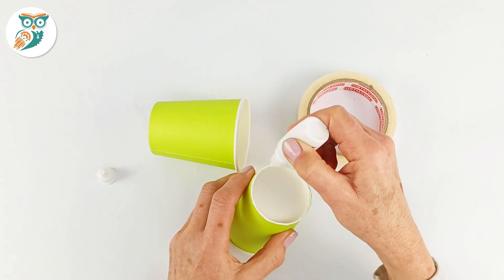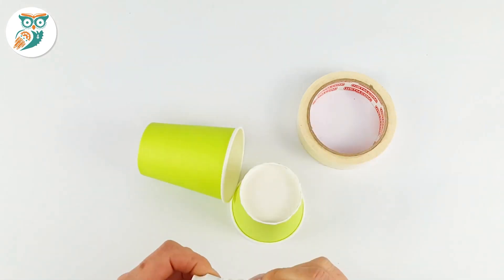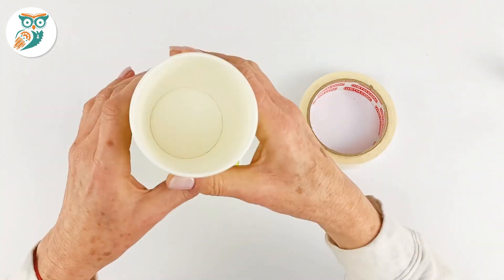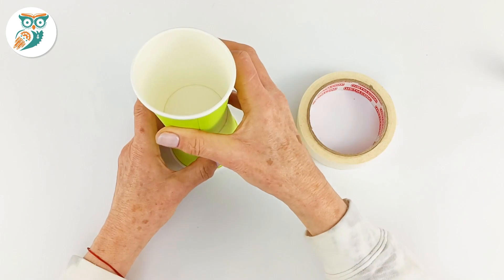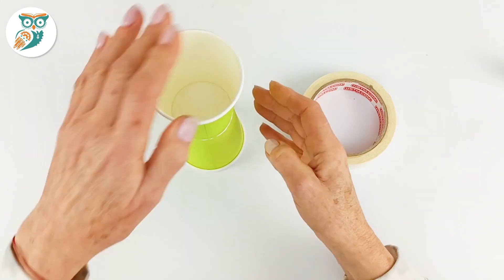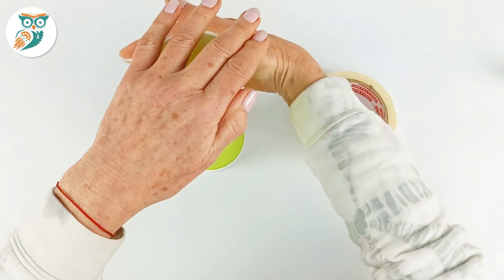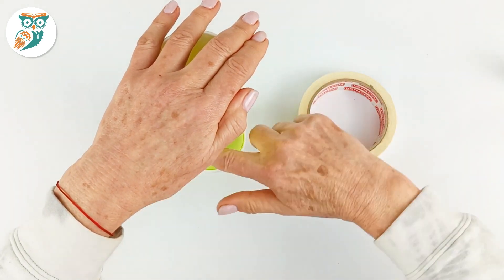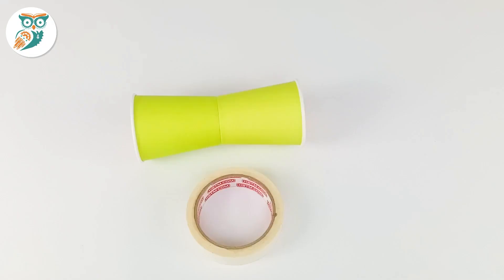We're going to take our cups and apply some glue on the bottom of one and then stack the other one on top. Now you want them bottom to bottom so the open ends are facing out when you glue them together. Make sure that they're glued nice and tight and secure. Make sure that edge is really clean and smooth and then let it dry.